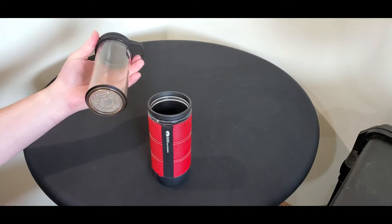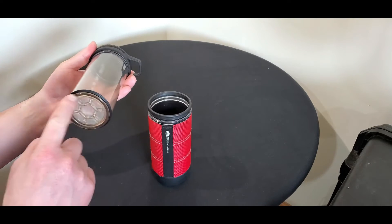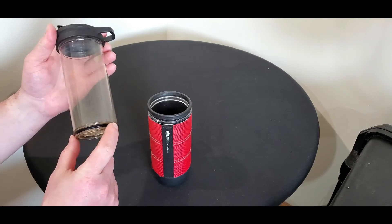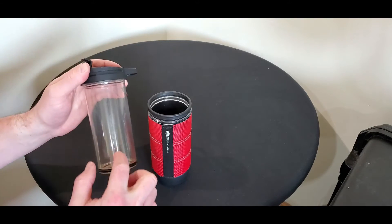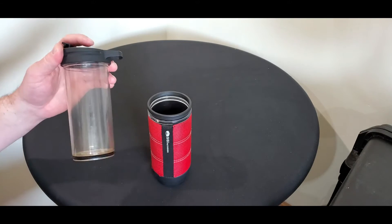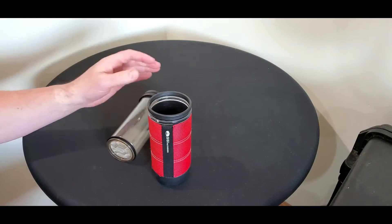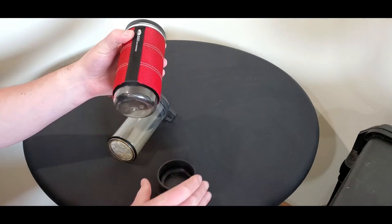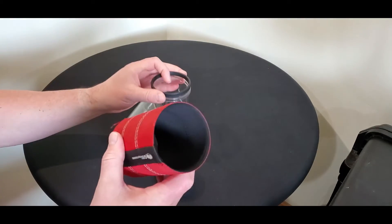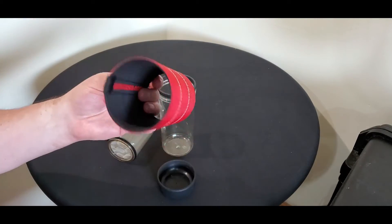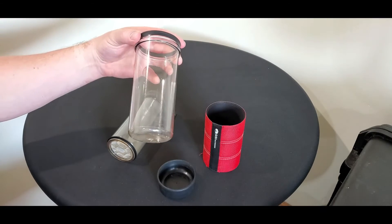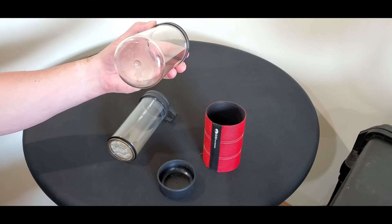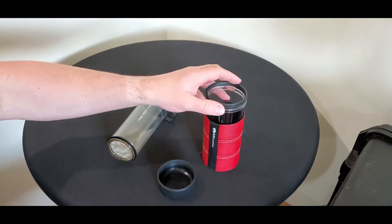You see it's actually a French press built all into one. It has a gasket here, the screen in the bottom. This is the chamber that the coffee goes into when you press it down. It comes all the way apart, it's dishwasher safe, and it has this insulated sleeve that you can also clean up if needed. Very simple but extremely useful.